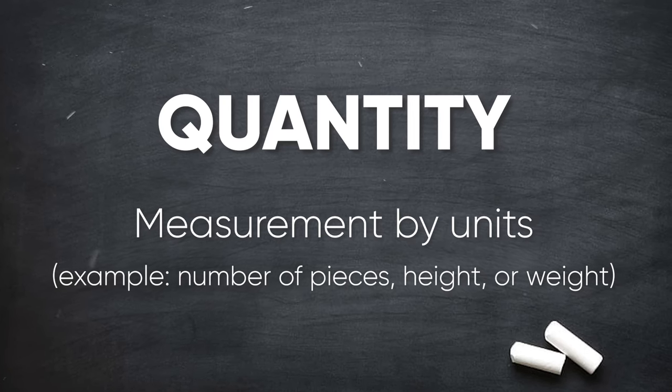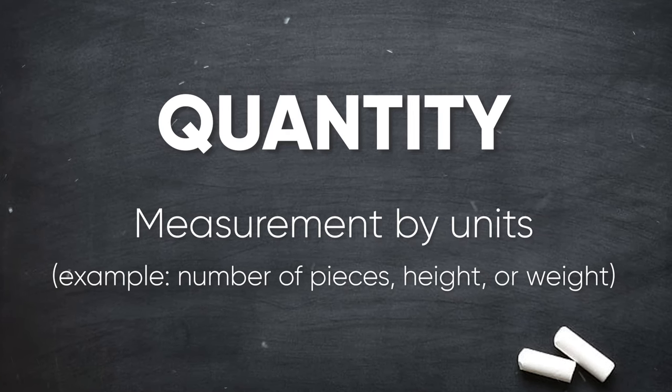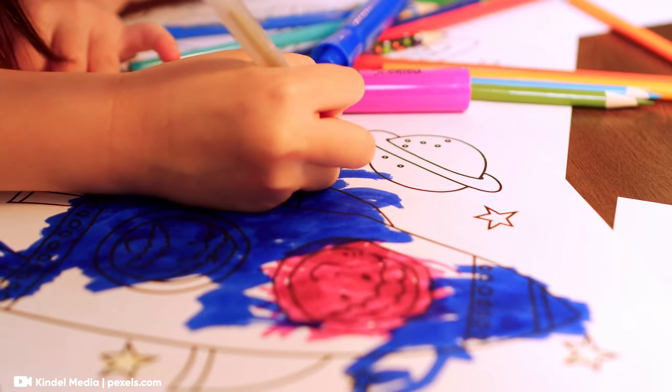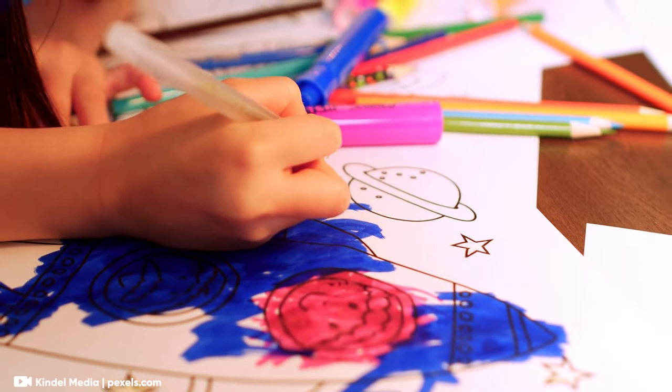Another property is quantity or number. This refers to how many units or pieces we have of something. For example, how many colors do you see on this drawing, how many shapes, and so on.